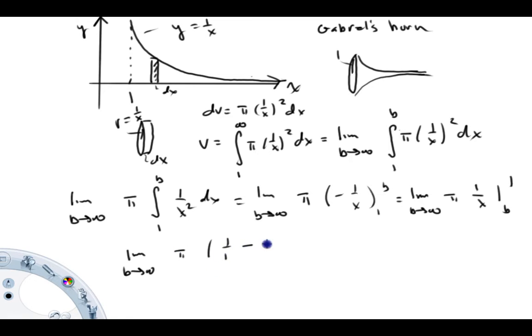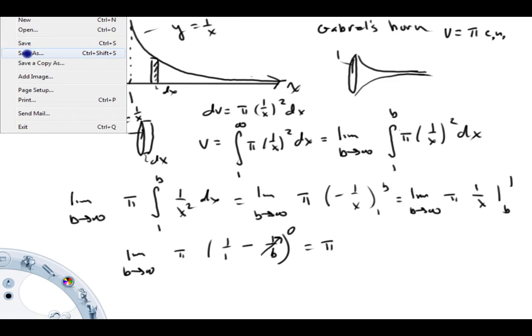So that's going to equal limit as b goes to infinity of pi times 1 over 1, minus 1 over b. Now, the 1 over 1 is just 1. As b goes to infinity, this term goes to 0 right here. And our value ends up being pi times 1, which is pi. So Gabriel's horn has a volume that is finite and equal to pi, 3.14159 cubic units. So I'm going to go ahead and write that down. So the volume of this thing is pi cubic units.